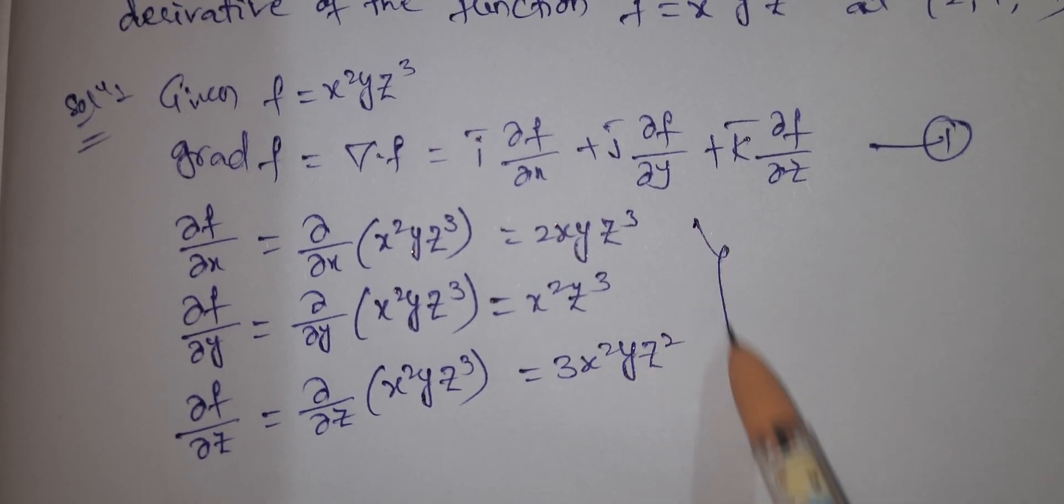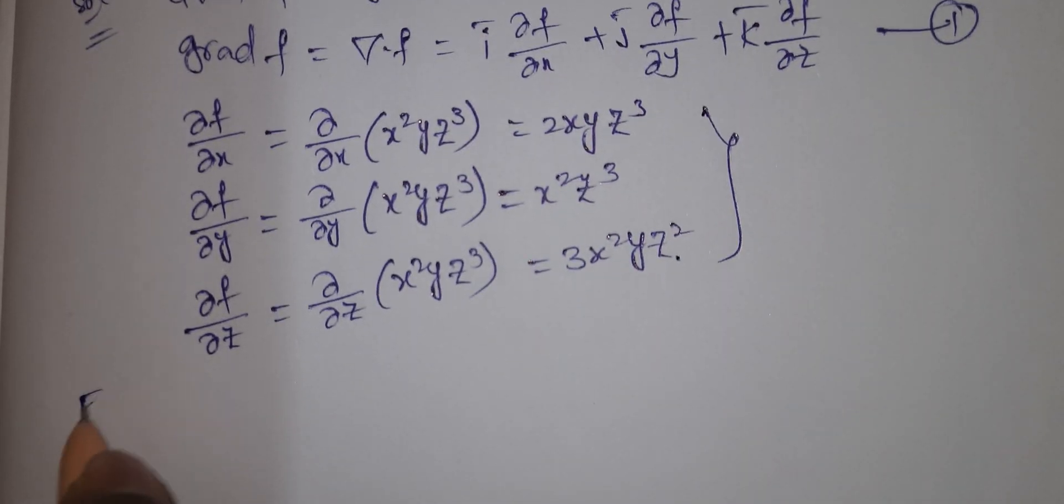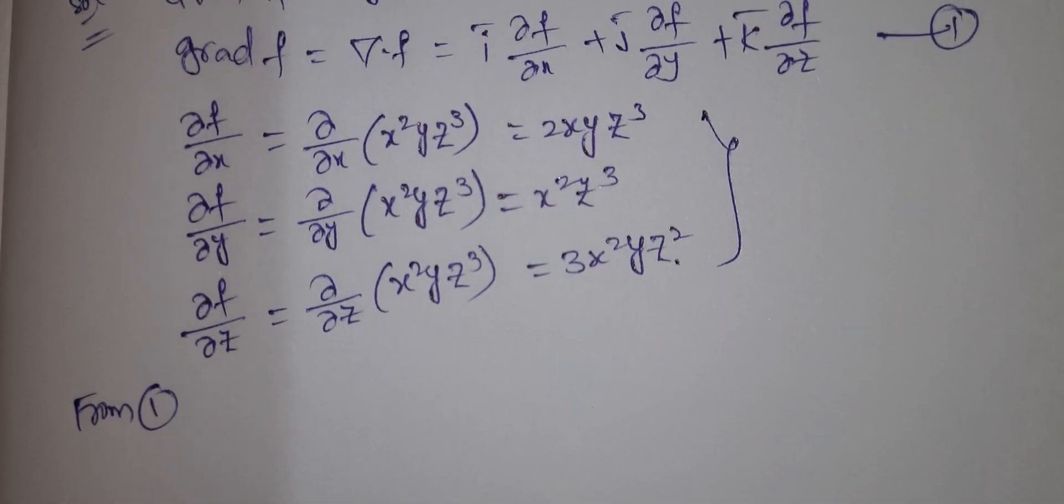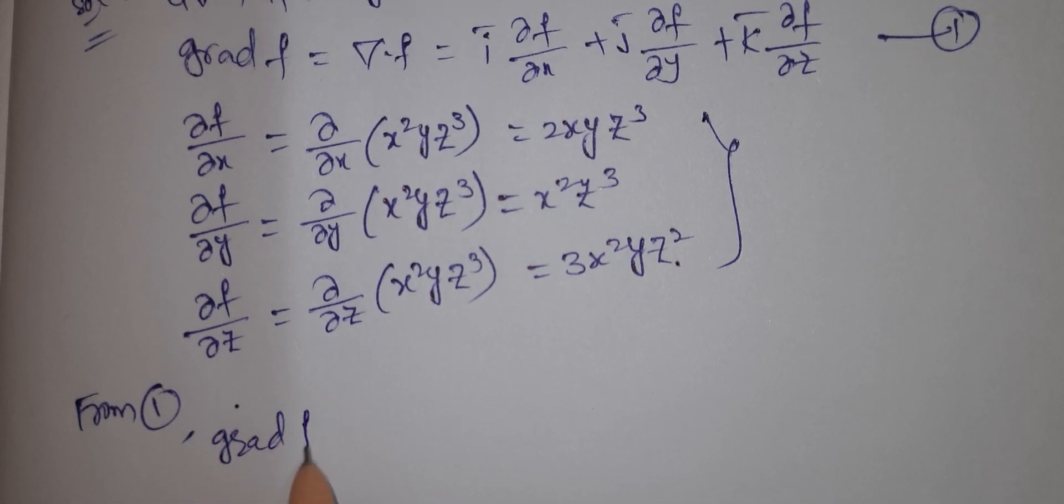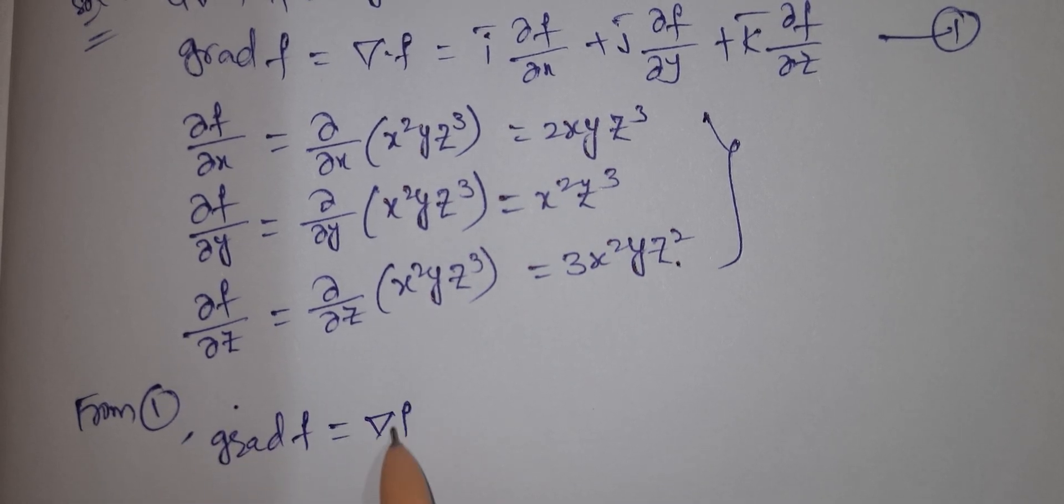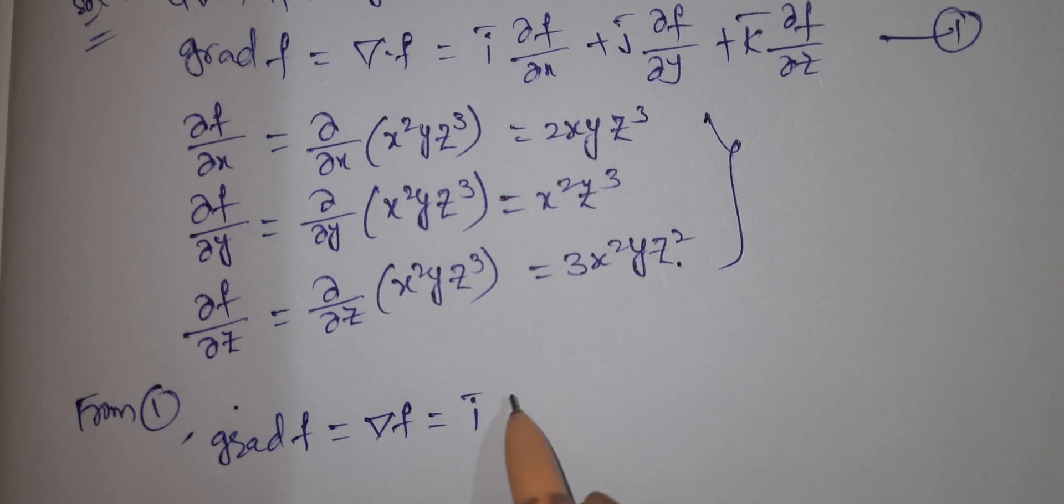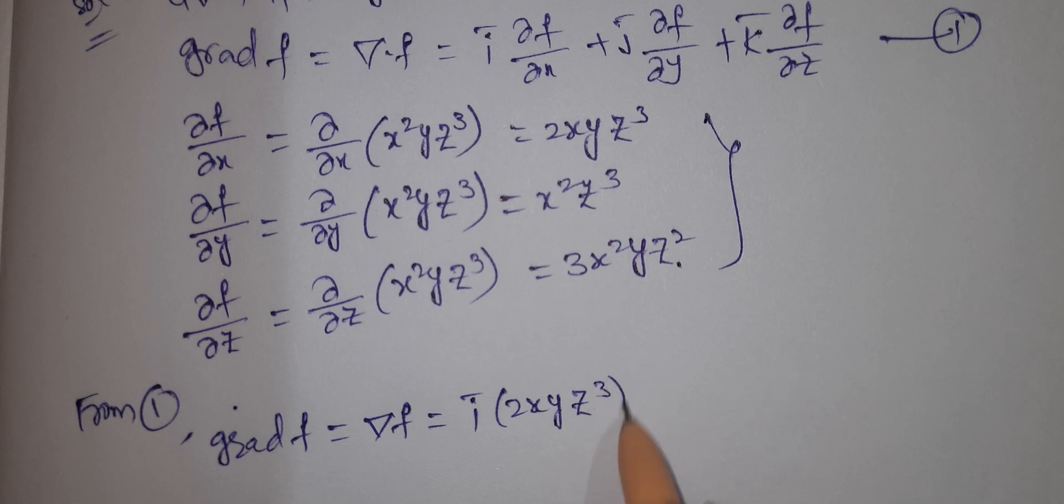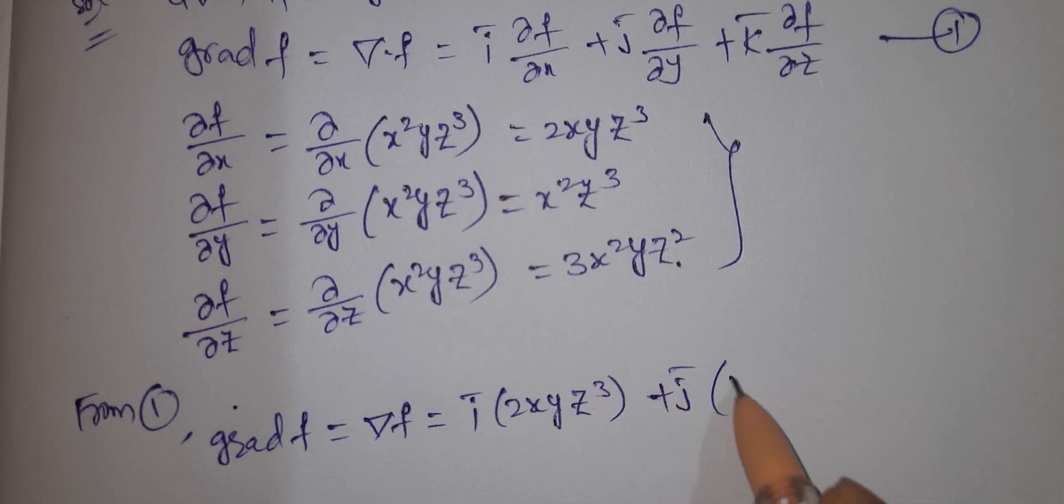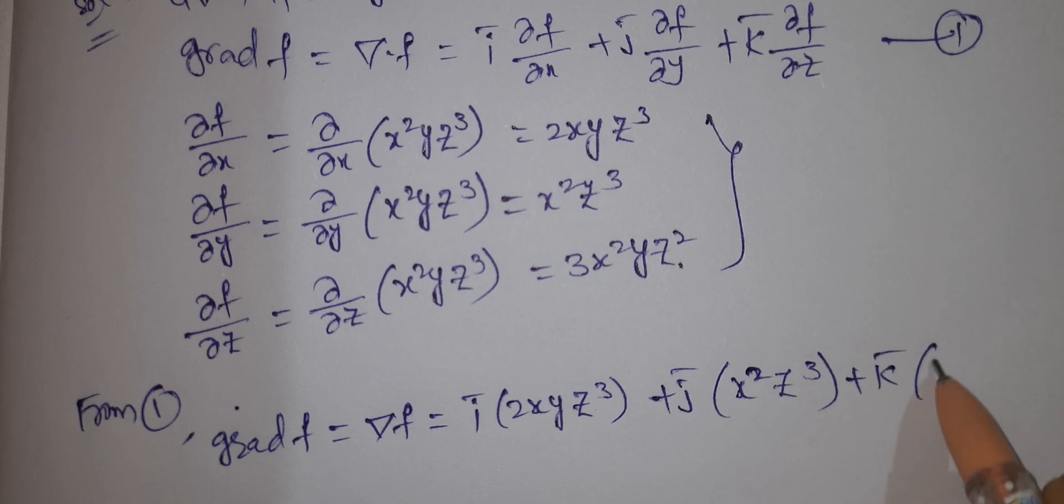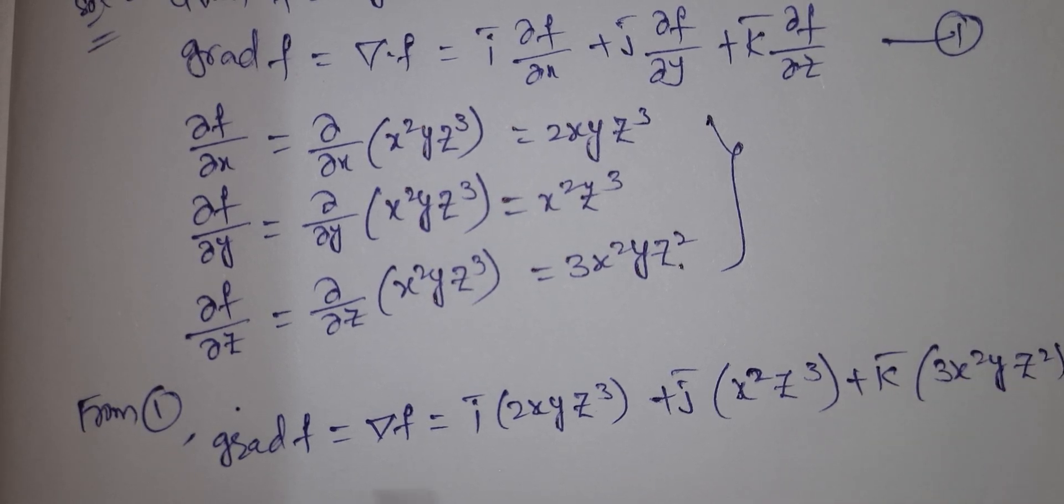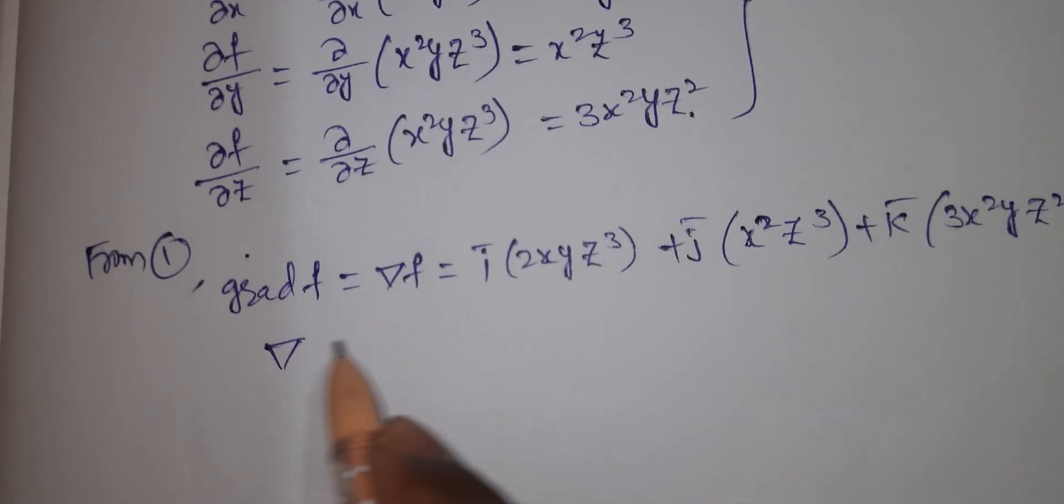From equation 1, grad f equals del f equals i bar (2xyz cubed) plus j bar (x squared z cubed) plus k bar (3x squared yz squared).